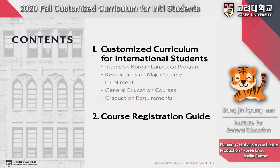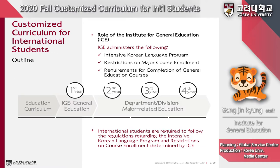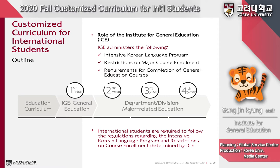Today I'm going to explain the Customized Curriculum for International Students and the Course Registration Guide. The ultimate goal of the Customized Curriculum for International Students is to improve language skills, major-related basic knowledge, and academic performance. With this aim, we administer a general education curriculum, an intensive Korean language program, restrictions on major course enrollment, and requirements for completion of general education courses.